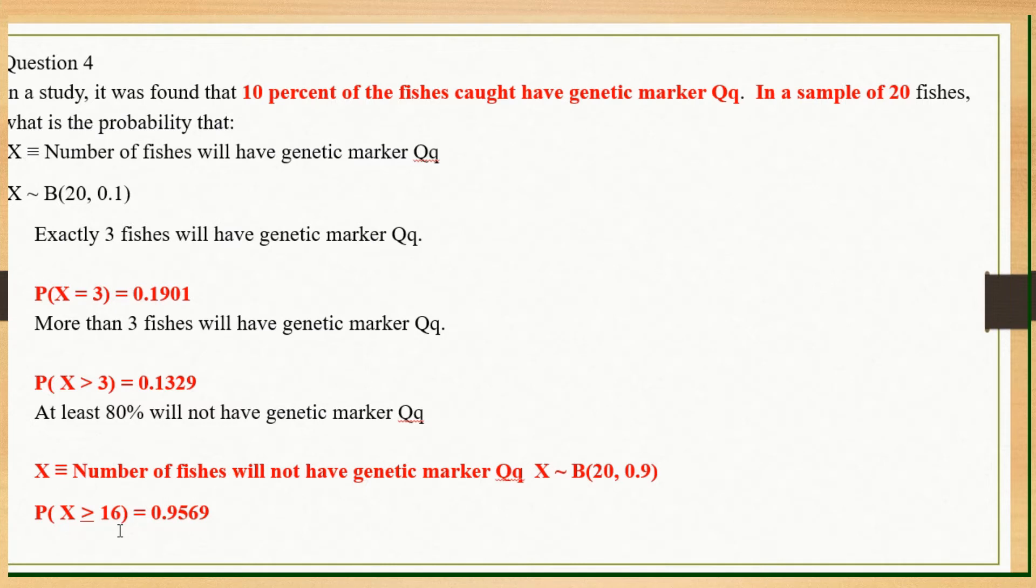So if they want at least 80%, at least 80% of 20, if you take 0.8 times 20, you will get 16. So at least 80% is 16 or more. 16 or more will be 16, 17, 18, 19, 20: 0.9569. Of course, you can do it the other way around if some of you want. But this question, you don't really need to rewrite your event and distribution.